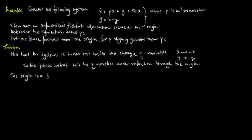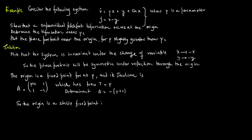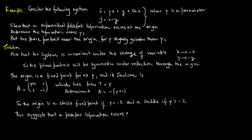The origin is in fact a fixed point for all mu, and its Jacobian is A equals [[mu+1, 1], [1, -1]], which has trace tau equals mu and determinant delta equals minus(mu+2). So the origin is a stable fixed point if mu is less than minus 2, and a saddle if mu is greater than minus 2. This suggests that a pitchfork bifurcation occurs at mu-critical equals minus 2, but we still need to confirm this.